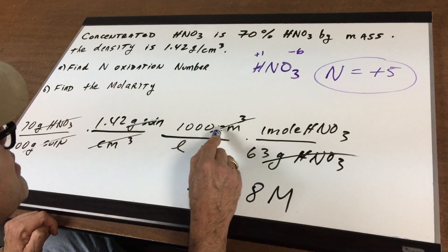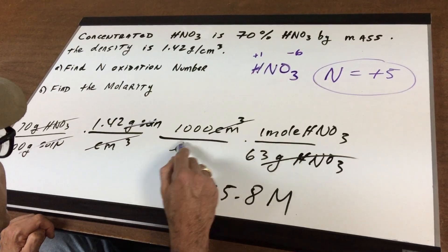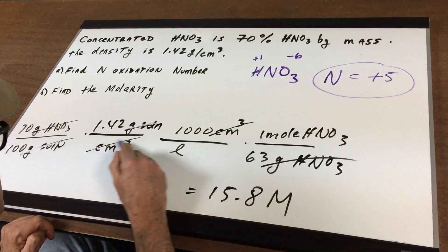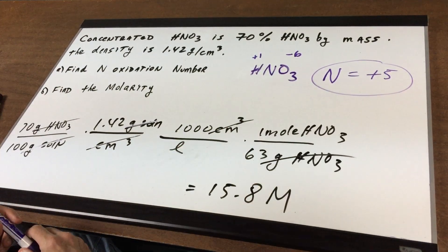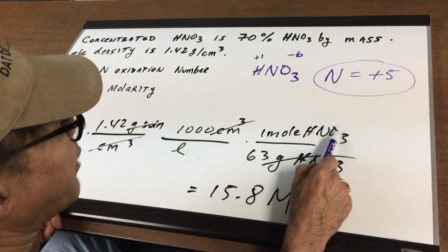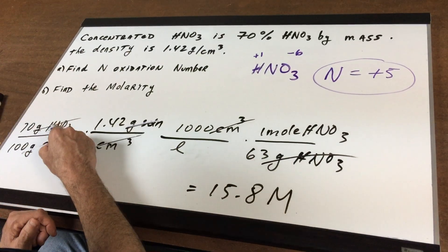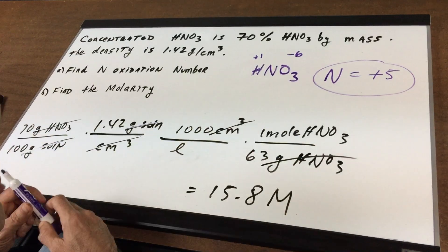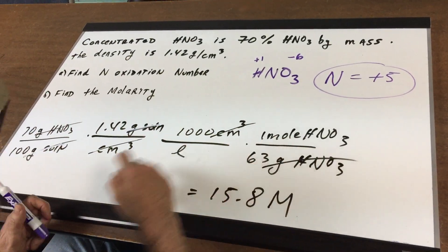A thousand cubic centimeters is in a liter, and notice centimeters cubed cancel out. And then finally, a mole of nitric acid weighs 63 grams, and that crosses out the grams. You're left with moles per liter.